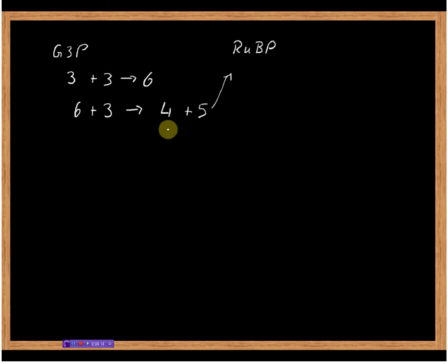Now this four carbon molecule, which is actually an erythrose derivative, this four plus three and again we've got one of the glyceraldehyde 3-phosphate,